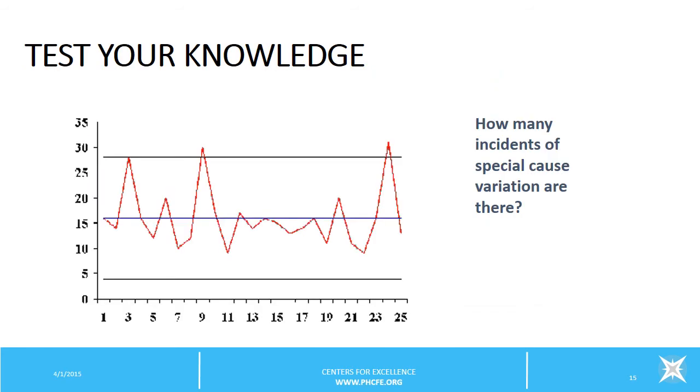Let's test your knowledge now with this brief little quiz. In this example of a control chart, how many incidents of special cause variation are there? If you answered two, you'd be correct. There are two incidents of special cause variation shown here because the data points fall outside the upper control limit. What action would you take with this information? The answer to that is to investigate the special cause.